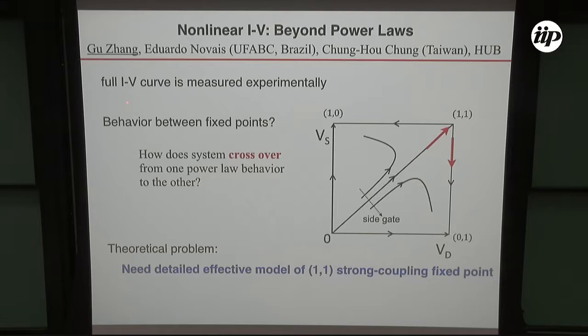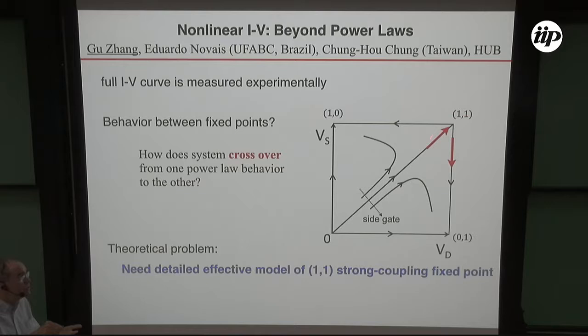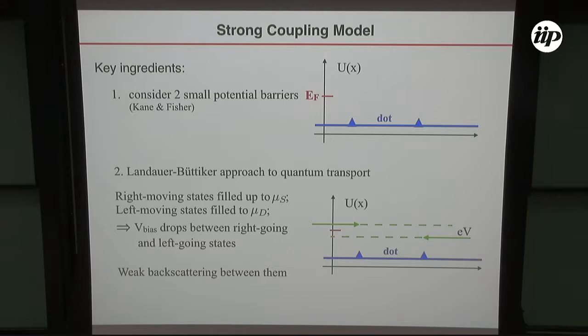The non-equilibrium aspect is not a problem experimentally — they just turn up their applied current and get the IV curve. For us theorists, it's a problem. If we want the full IV curve, we need to know not just the scaling behavior, not just the power law as we approach the various fixed points, but what happens along the whole line — how it crosses over from one fixed point to another. In order to describe the crossovers having to do with the strong coupling fixed point, I need an effective model of what's really happening at that fixed point.